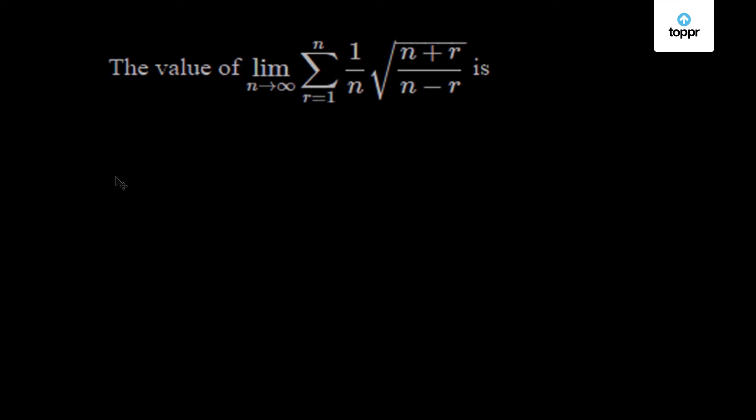This is a question on definite integration, which is expressed as limit of a sum. The question is the value of limit n tending to infinity, sigma r equals 1 to n, of 1 by n times the square root of (n plus r) by (n minus r).